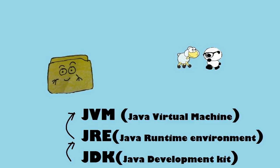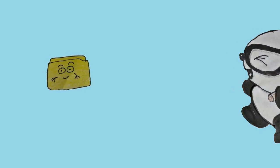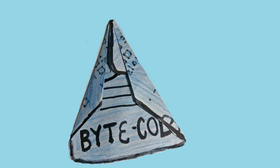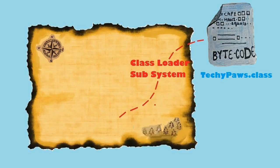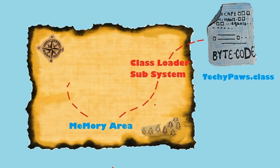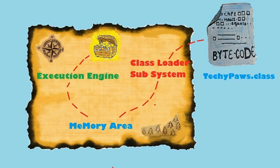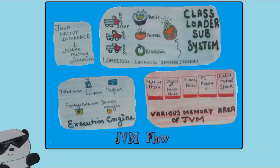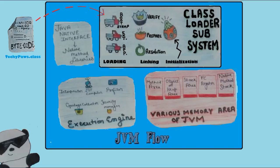JVM is present in JRE, which is a part of JDK. JRE has tools like javac which helps to compile a .java file to a .class file. The .class file will run through different phases: the class loader subsystem, then various memory areas, and then to the execution engine.